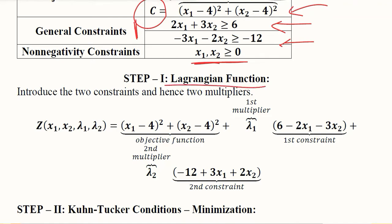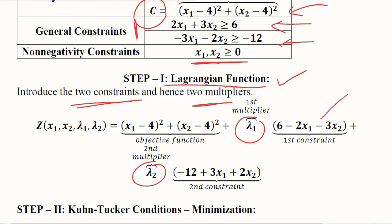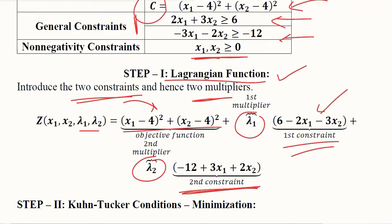We form the Lagrangian function just as before. There are two general constraints, so there will be two multipliers, lambda 1 and lambda 2 respectively. This is the first constraint after inversion, and this is the second constraint after inversion. Together with the objective function, the Lagrangian function is built in the same way as before.